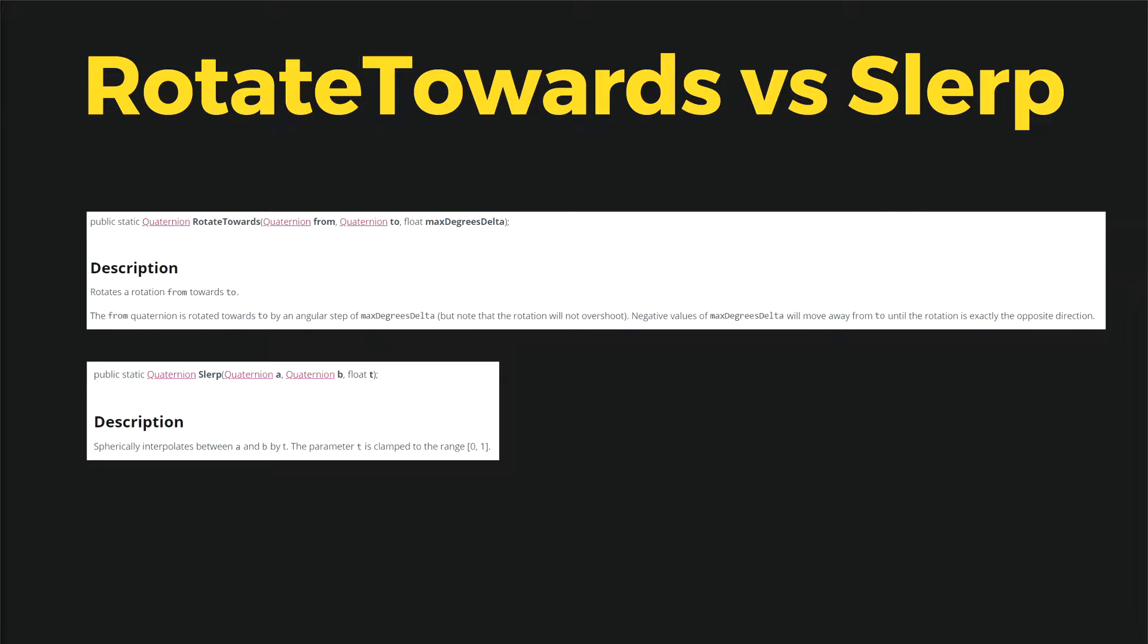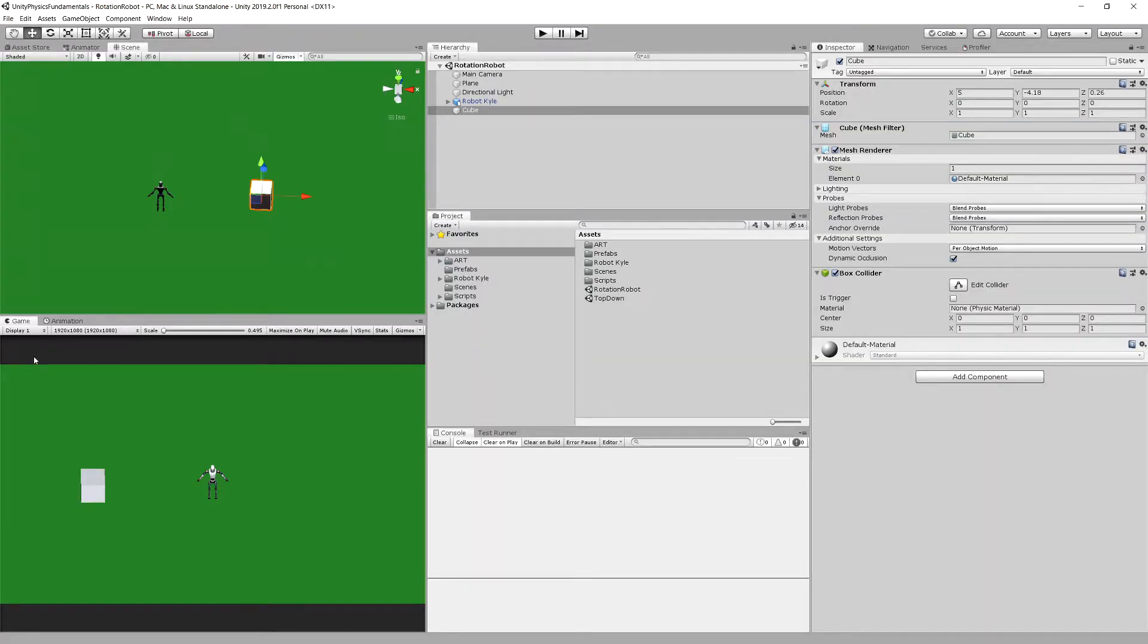On the other hand, the RotateTowards allows you to rotate with constant speed, which is useful if you want to preserve constant conditions, like when aiming a tank turret. Okay, but what about 3D?